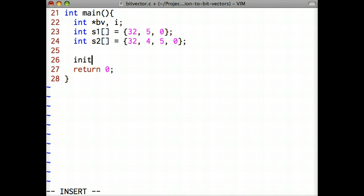Because we're representing integers between 1 and 32, I'll initialize a bit vector with a maximum value of 32. After the call to initbv, the variable bv will point to an area in memory that we can use as an integer array.